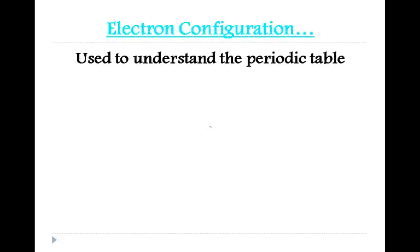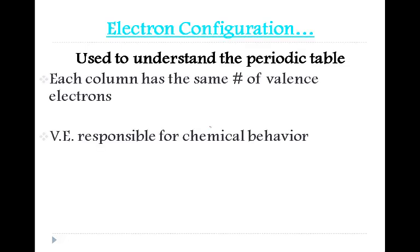So, each column on the periodic table has the same number of valence electrons. This explains why elements are put in the same family, why they have the same chemical properties. Because the valence electrons are responsible for their chemical behavior.